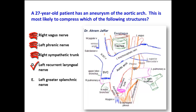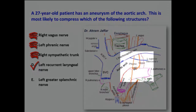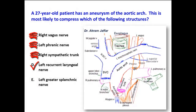So this nerve, as it curves around the arch of the aorta, might be compressed between an aneurysm in the arch of the aorta and the pulmonary trunk and pulmonary artery. So this nerve is most likely to be compressed by the aortic aneurysm.